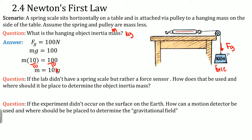The second question: What if this lab didn't have a spring scale, but rather a force sensor or a force probe? How can that be used and where should it be placed to determine the object's inertial mass?